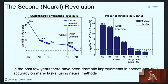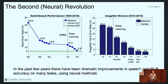The ImageNet problem shows even more dramatic progress, driven by two things: A, the beautiful ImageNet dataset with millions of labeled images, and B, convolutional networks, which were shown to produce amazing results on this task.